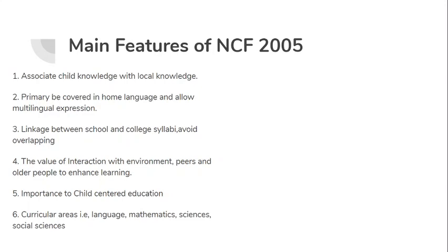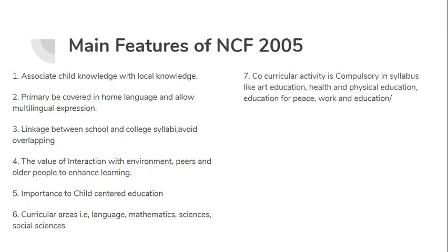Curricular areas — language, mathematics, science, social science — should be made stress-free, focused on well, and designed so that the child can relate to them and enjoy them while studying. The seventh feature: co-curricular activities should also be compulsory within the syllabus — such as art education, physical education, education for peace, work and education. All co-curricular activities must be compulsorily included in the syllabus.